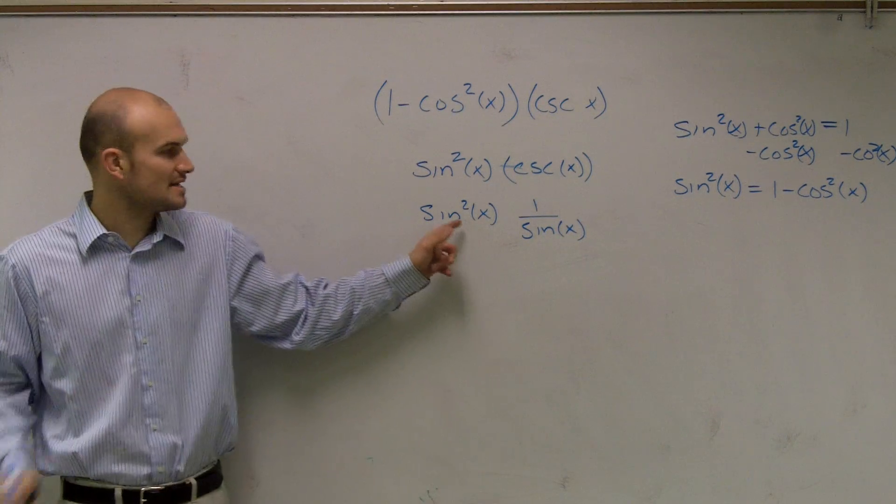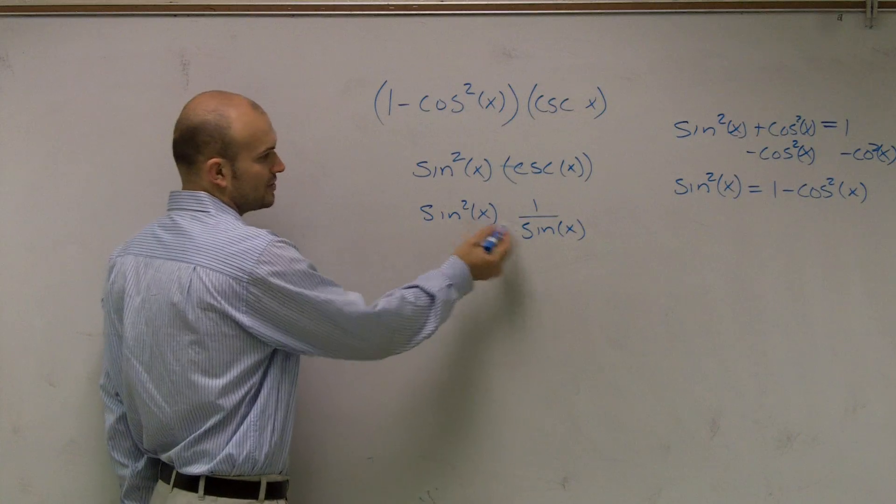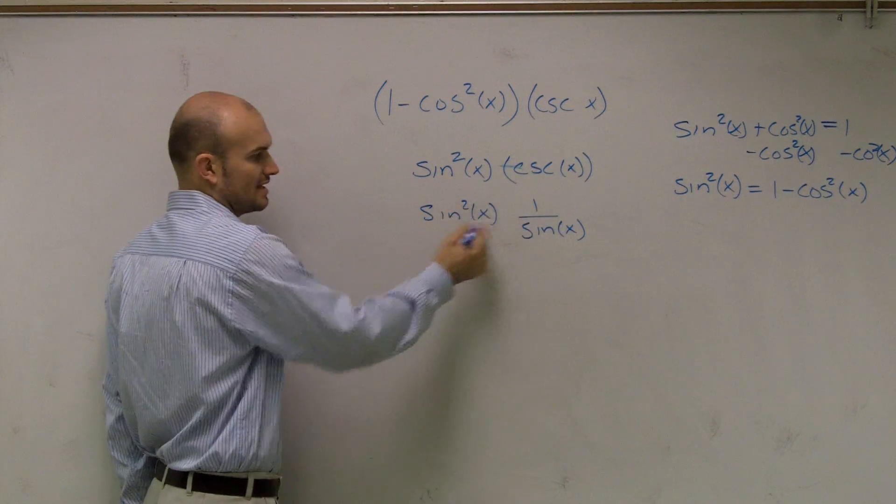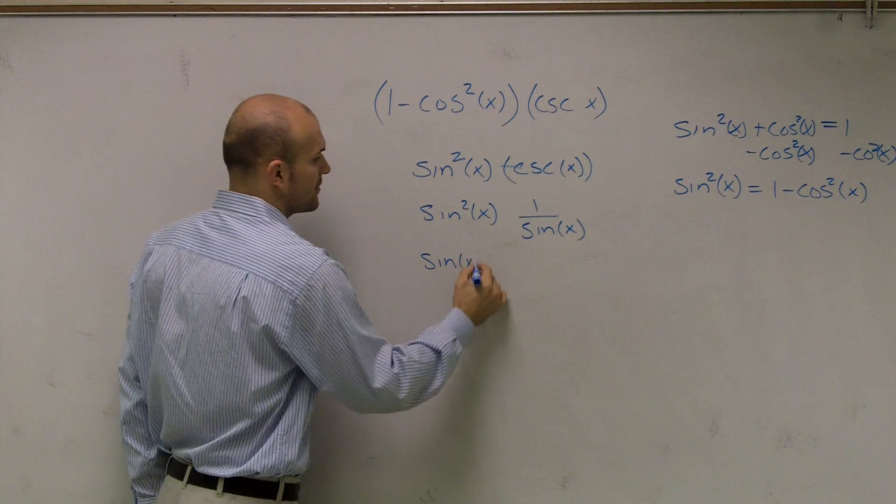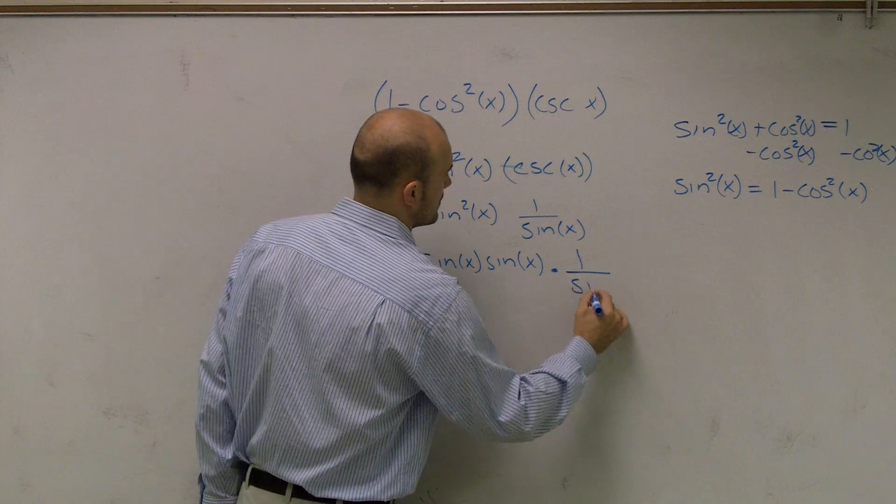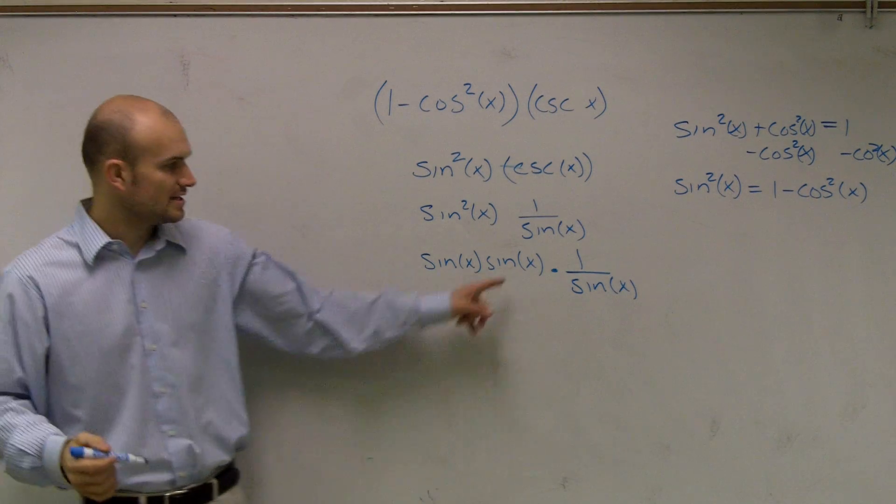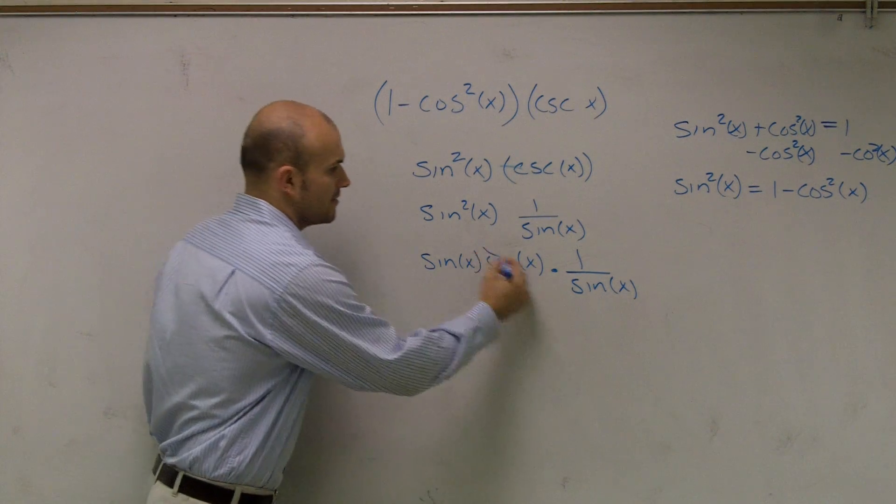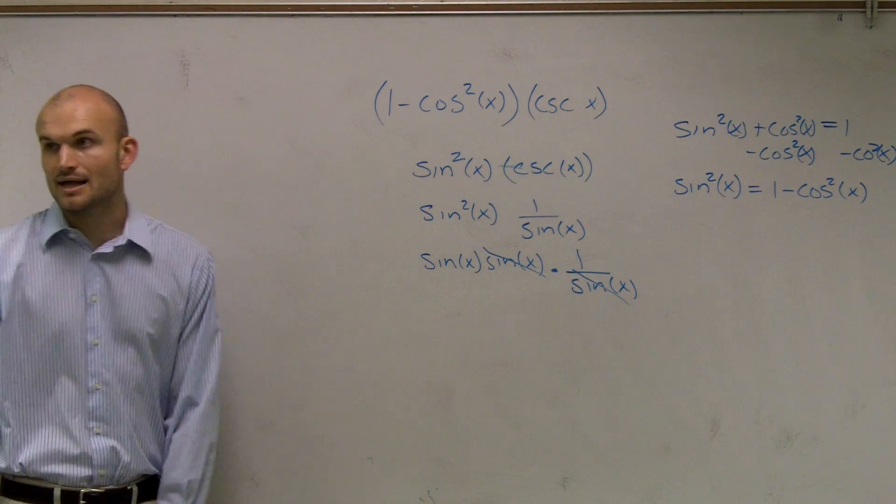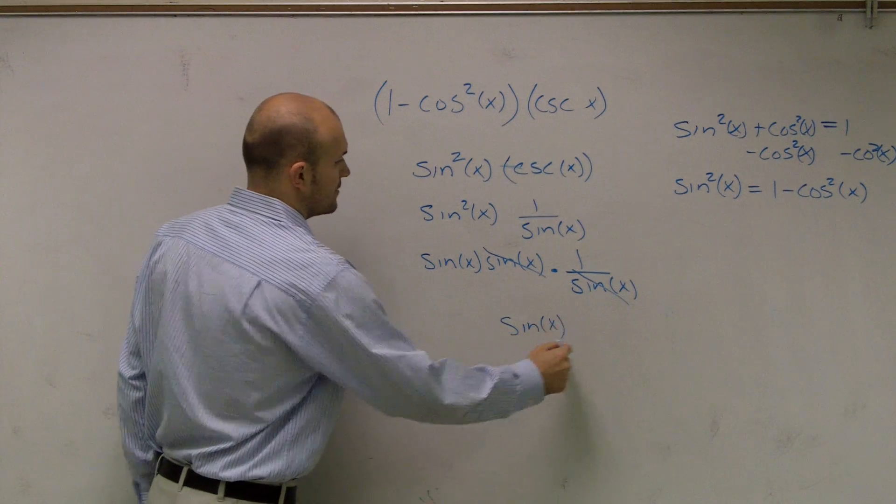Now remember, sine squared means sine squared of x times sine squared of x. So you can either just understand that one of those is going to cancel out, or if you want me to write it out, it will. Okay? So what you'll notice is when you multiply these, right, one of these is going to cancel out and you're just left with sine of x.